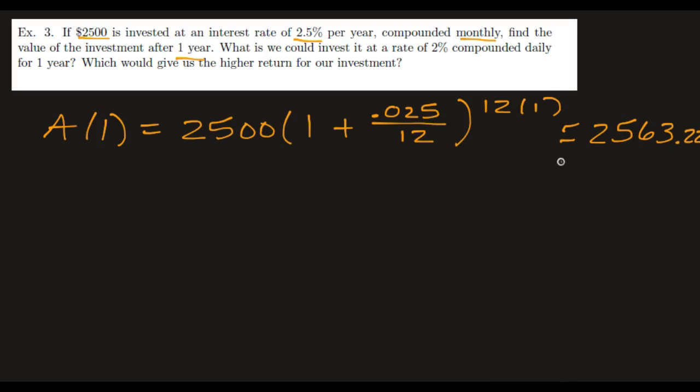Remember, a bank's not going to round up, so regardless, you should always round down on these. What if we could invest at a rate of 2% compounded daily for one year, which is going to give us the higher return?